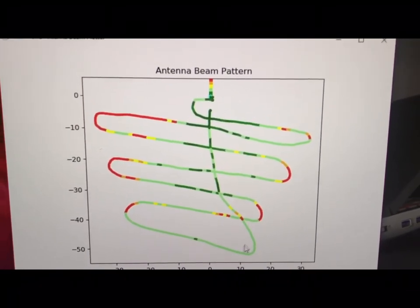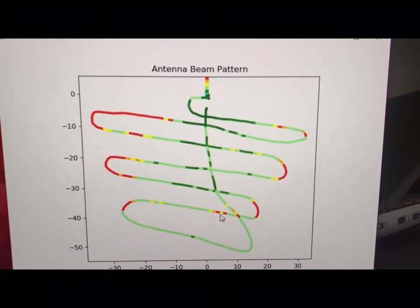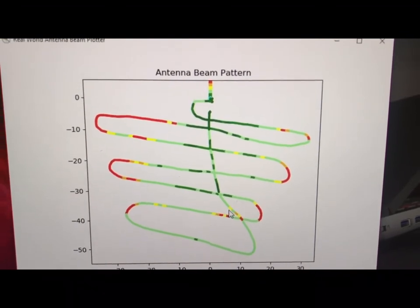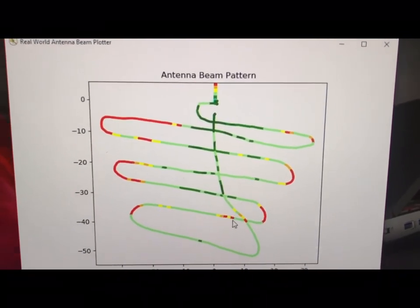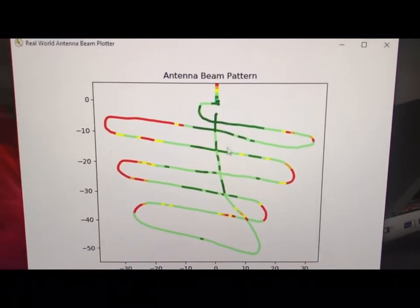There's some yellow spots here, probably because I was blocking the signal received by the receiver. When I walked this way, part of my body was shielding the signal that's coming from the antenna.